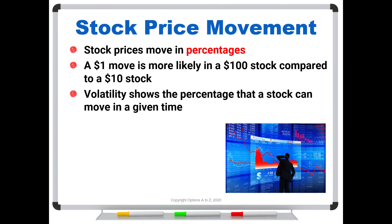Generally, volatility is reported as an annualized number. If you wish to scale it into a different timeframe, there is a technique — and yes, there is a video in the same forum showing you how to scale volatility. But for this video, I'm just going to be talking about volatility as an annualized number over the course of a year, just to make it a little easier to follow.